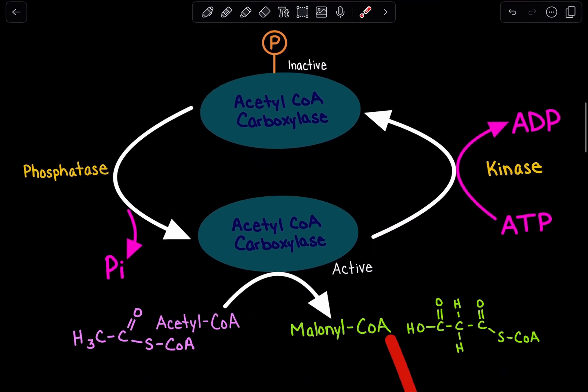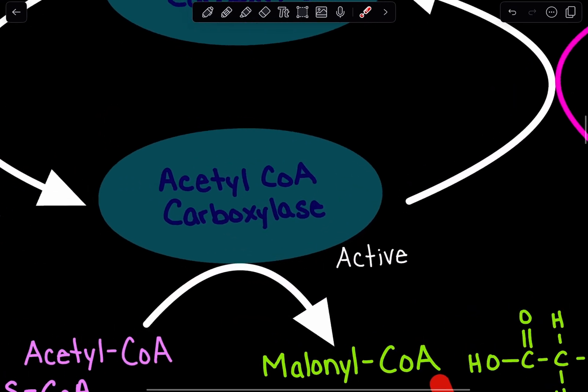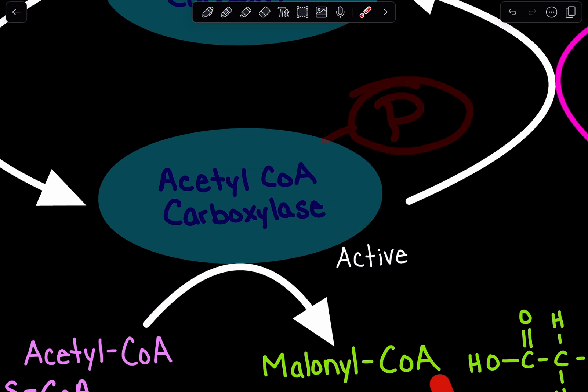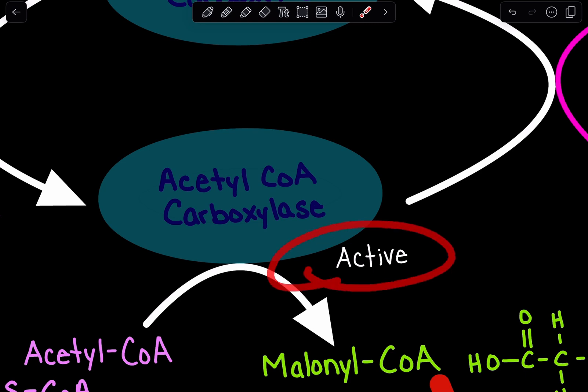If we remove the phosphate group through a phosphatase enzyme, we get acetyl-CoA carboxylase in its active form. When it is phosphorylated, it is inactive. When it does not have that phosphate group, it is activated.